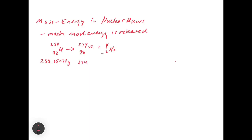we get 234.03660 grams. And then for the alpha particle, we get 4.00260 grams. These are the exact masses.